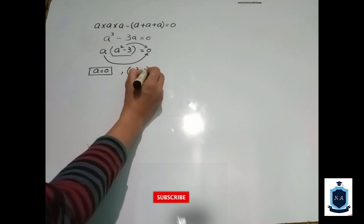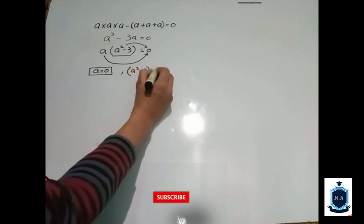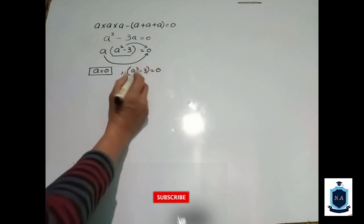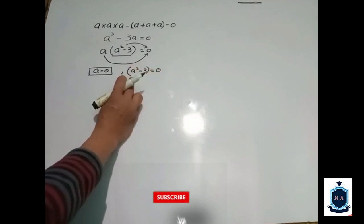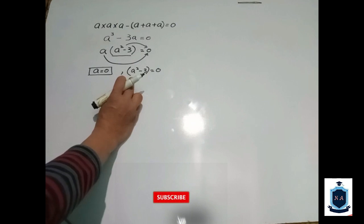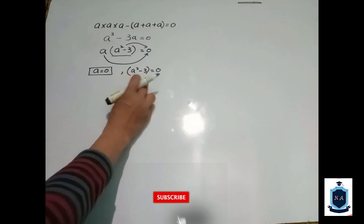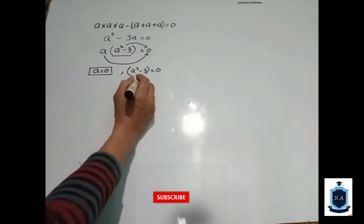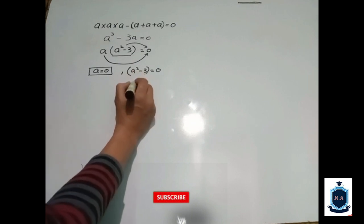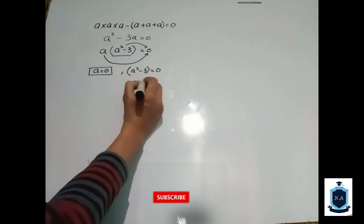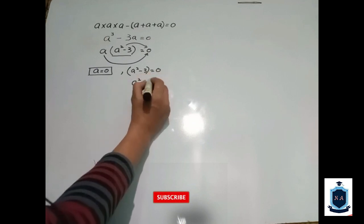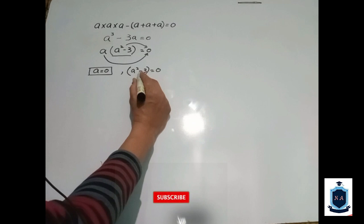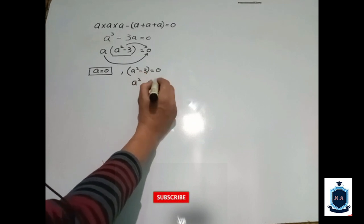Here you can see that a squared minus three equals zero, so we have to solve this other equation to find the value of a. Here you can see that a squared — if I transfer the value — you can see the minus sign changes sides.